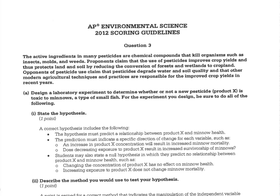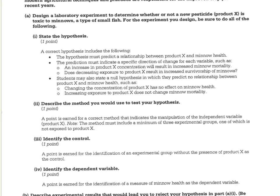If you wanted to see what they looked for in a hypothesis, one thing to notice is that you had to create or predict some sort of relationship between product X and minnow health. You also wanted to include the words 'increasing' or 'decreasing.' Those are specific types of vocabulary that they were looking for.